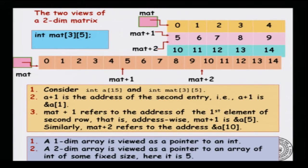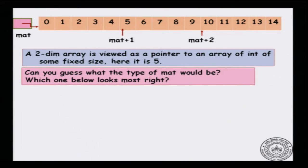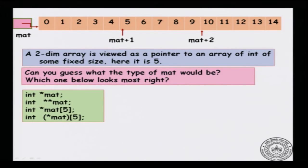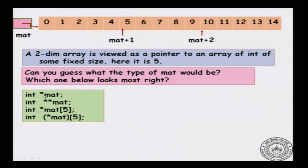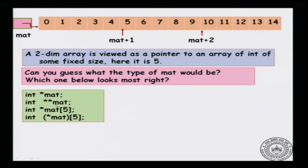Here is the pointer arithmetic for the row major representation, and notice that it is considerably different from the pointer arithmetic for a 1D array. Now, can you try to guess what will be the type of mat? Here are four candidates. The first is int* mat — mat as a pointer to int — which is approximately an array of integers and is definitely incorrect because this is supposed to be a 2D array. The second candidate is int** mat — a pointer to a pointer — which looks like a likely candidate.